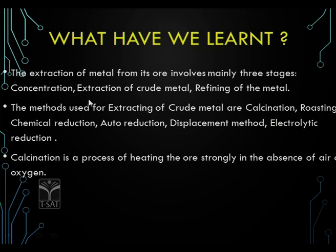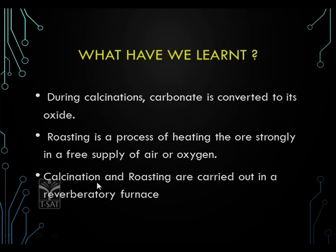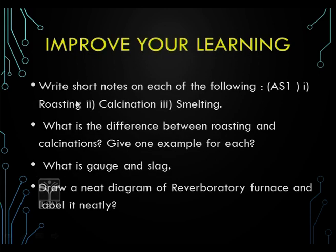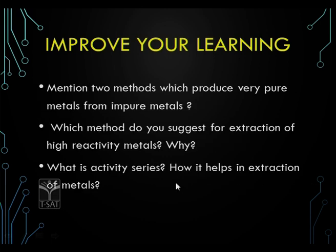Let us recap what we have studied. We have seen the extraction of metal from its ore, which involves three stages: concentration, extraction, and refining. We also studied different processes like calcination, roasting and smelting. Write short notes on calcination and smelting. Write the differences between roasting and calcination. What is gang? What is slag? Mention two methods which produce impure metals.